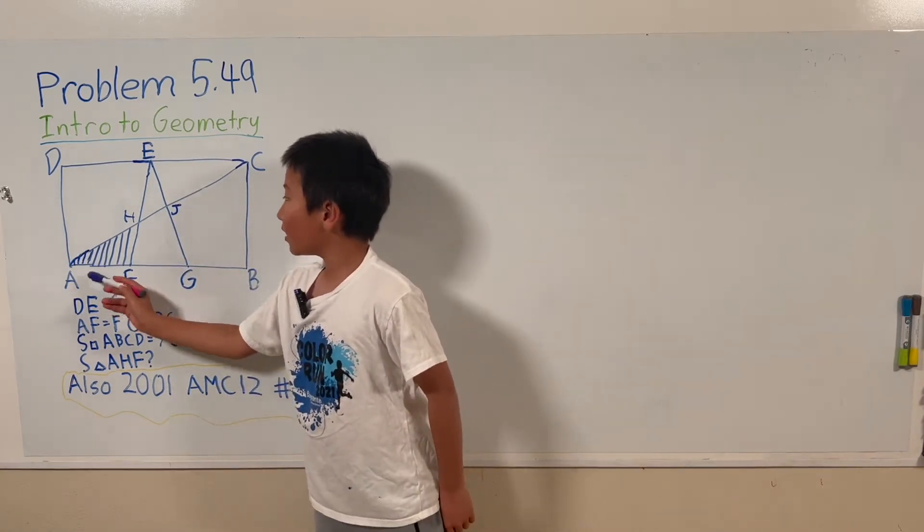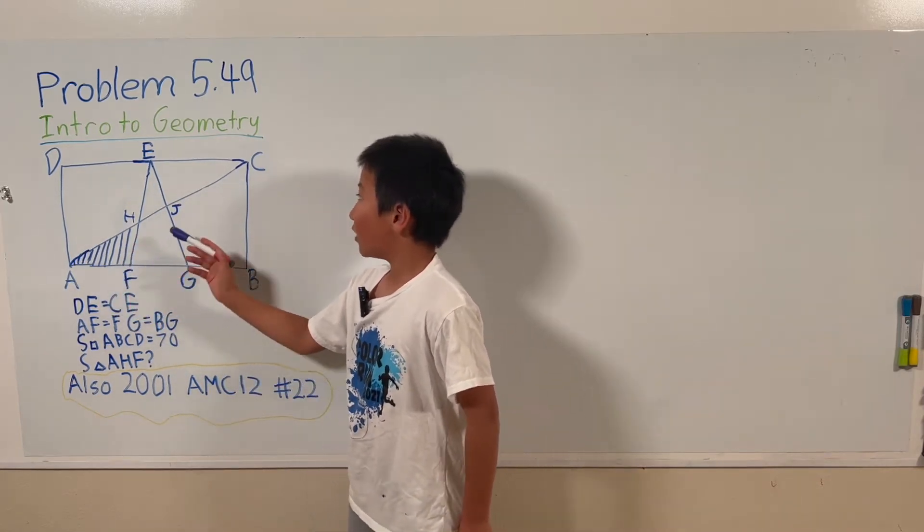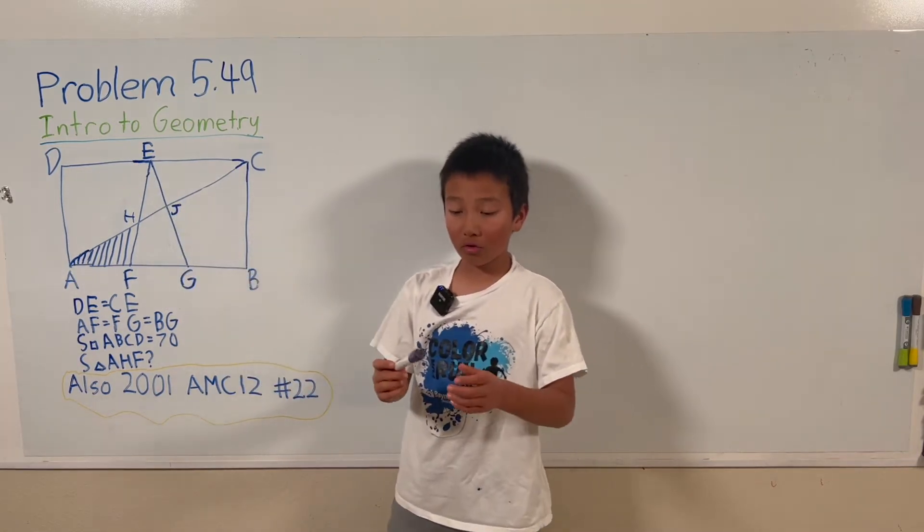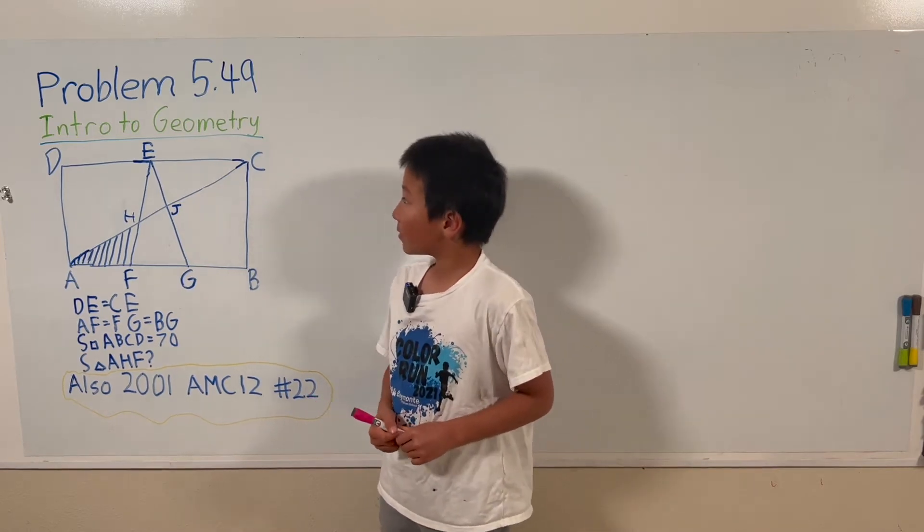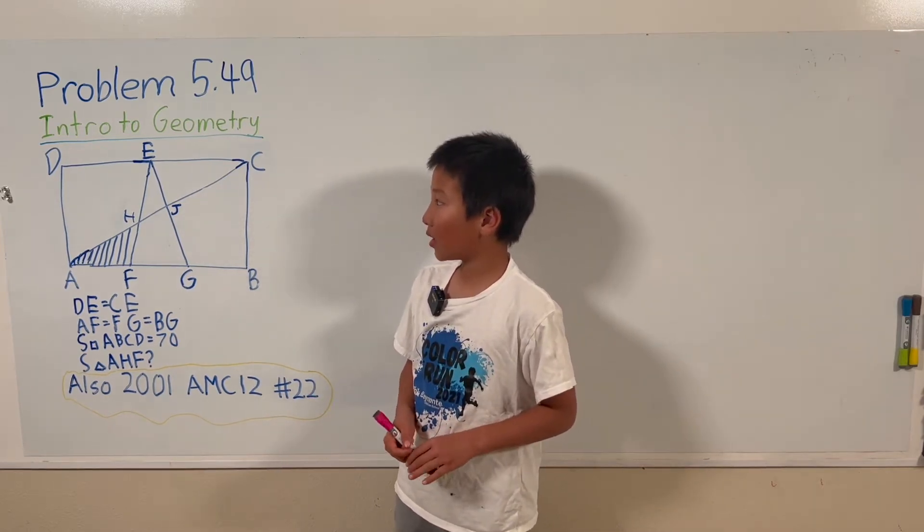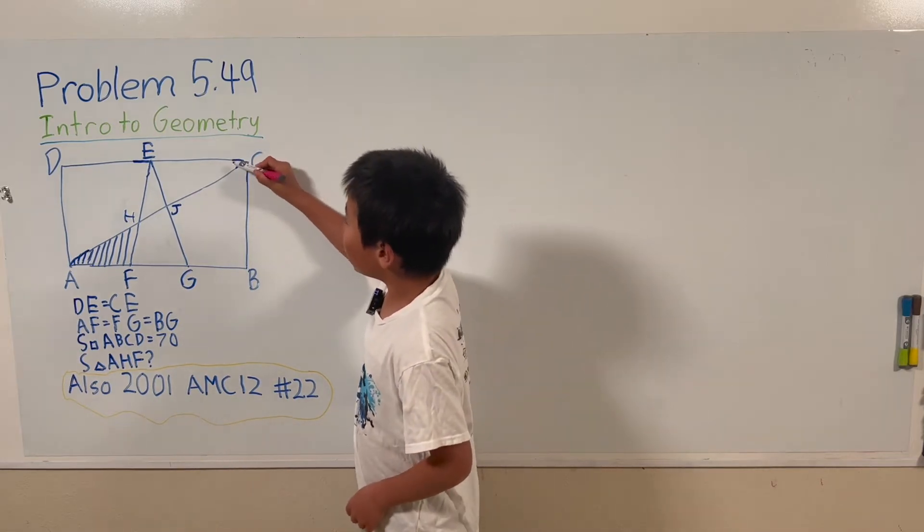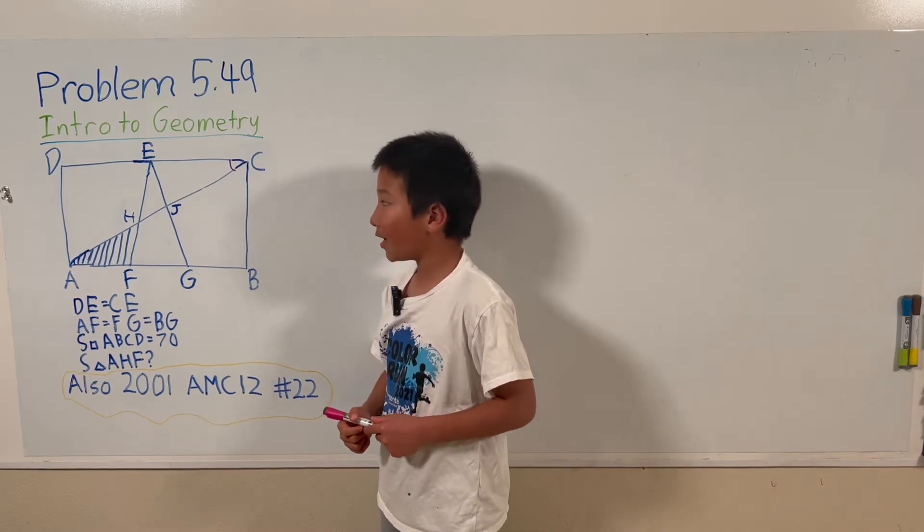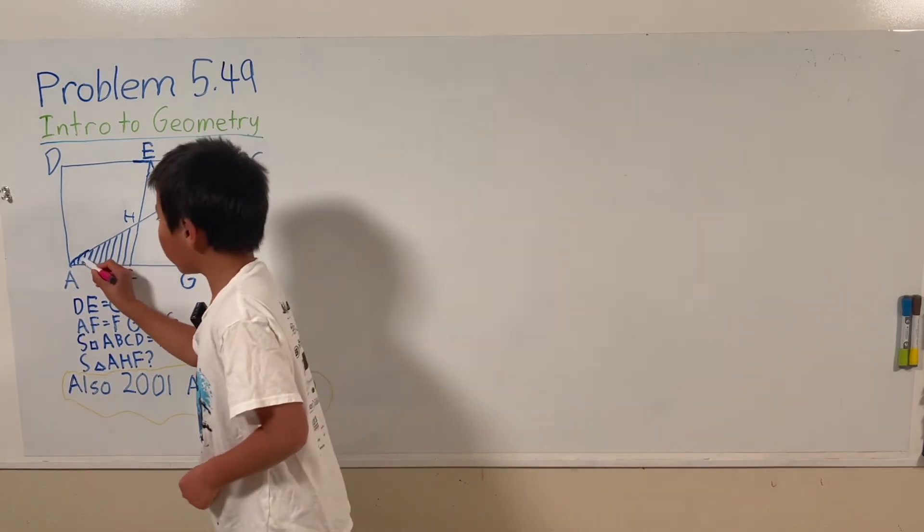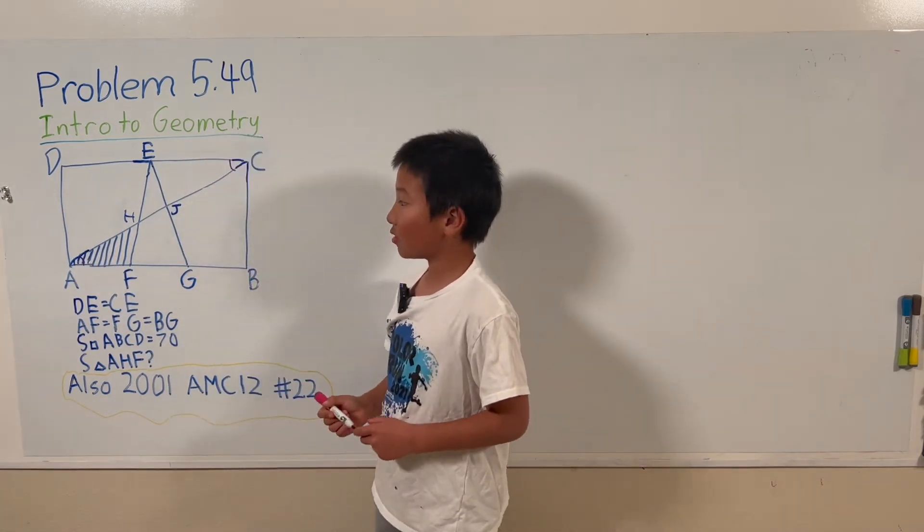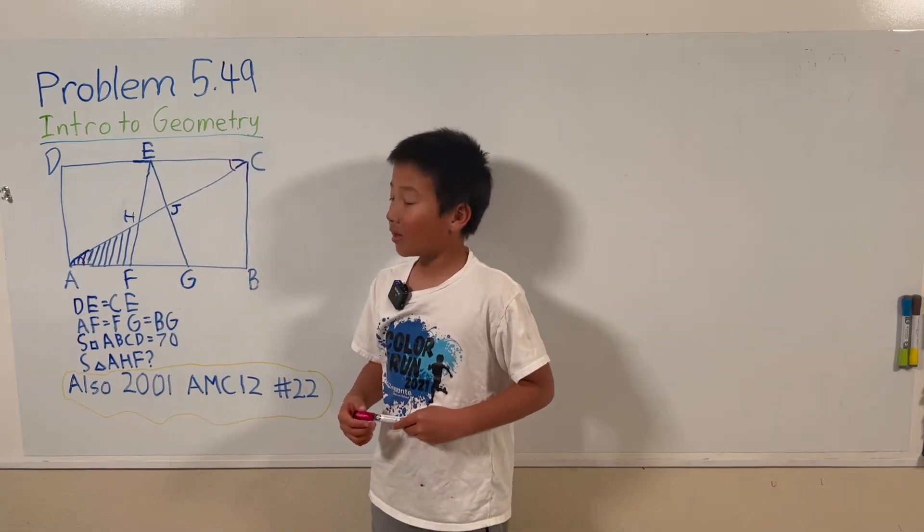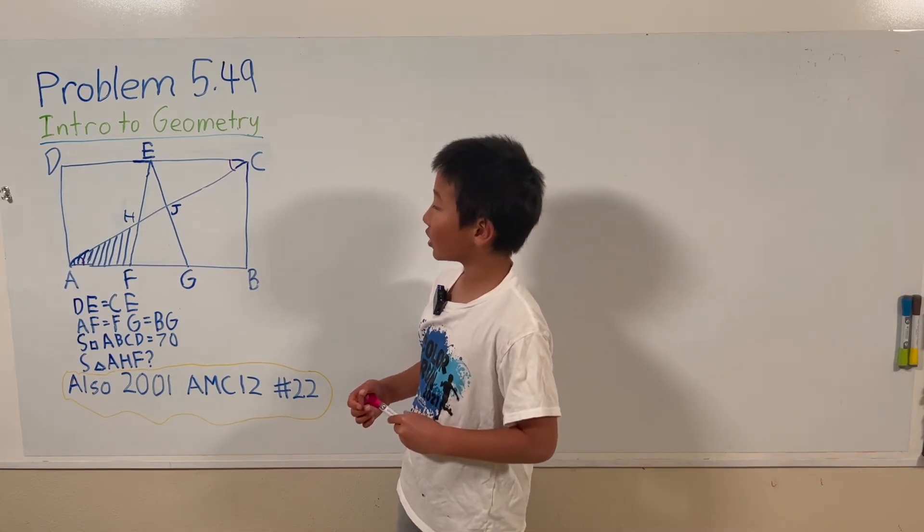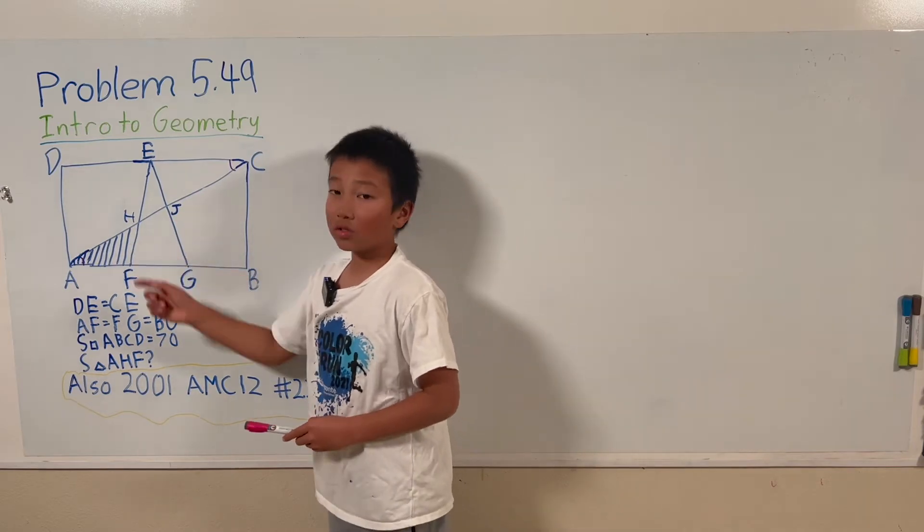So triangle AHF and triangle CHE are the similar triangles. We can know that because CD and AB are parallel, so angle DCA equals angle HAF. We also know that angle AHF equals angle EHC. So now we know that these two are similar.